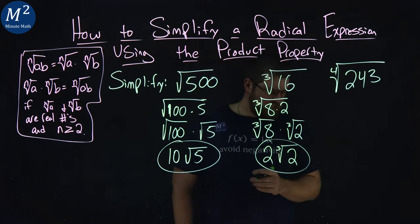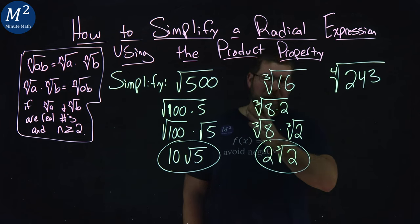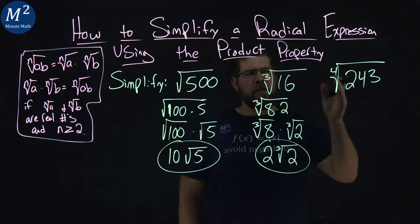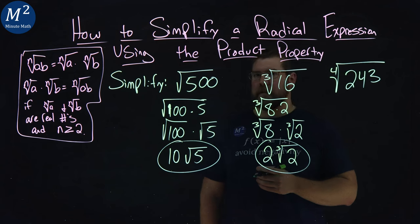Lastly, this one's a little more difficult. As you can tell, it's getting harder. The fourth root of 243.